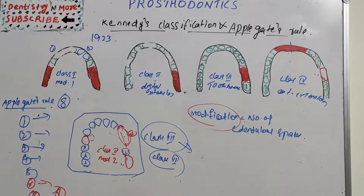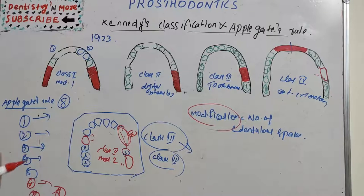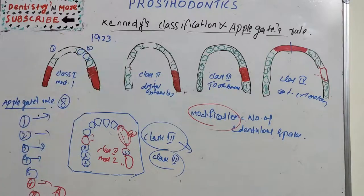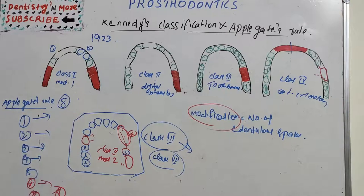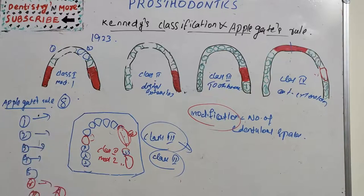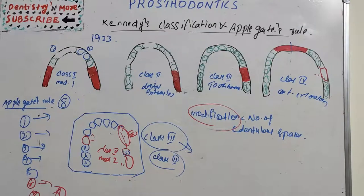To recap Applegate's 8 rules: Rule 1 — classification should follow extraction; Rule 2 — third molar missing and not replaced is not considered; Rule 3 — third molar present and used as abutment is considered; Rule 4 — second molar missing and not replaced is not considered; Rule 5 — most posterior edentulous area determines classification; Rule 6 — other edentulous areas are modifications; Rule 7 — only the number of edentulous spaces, not the extent, is considered; Rule 8 — no modification possible for Class 4.